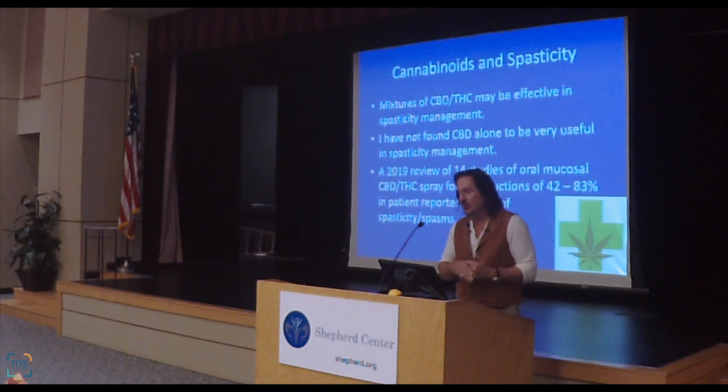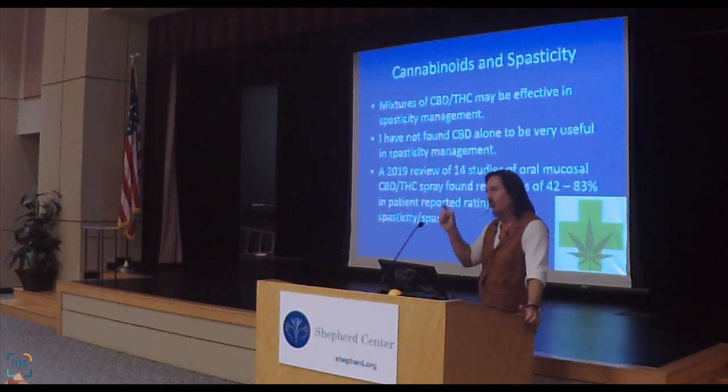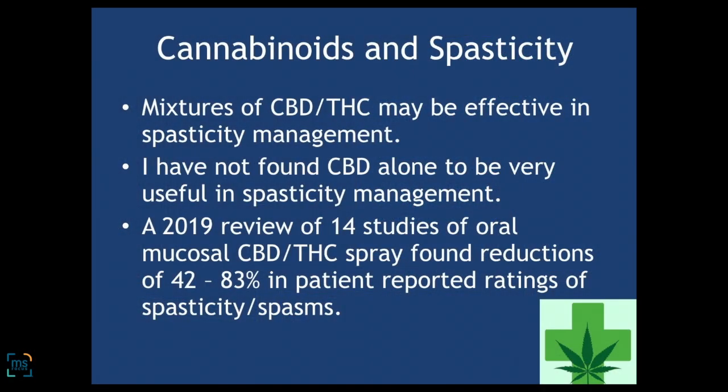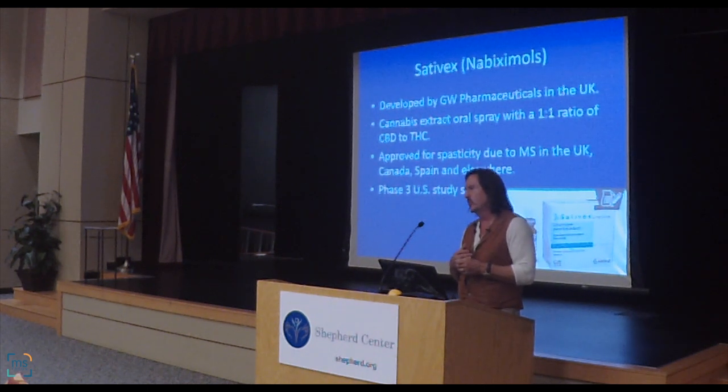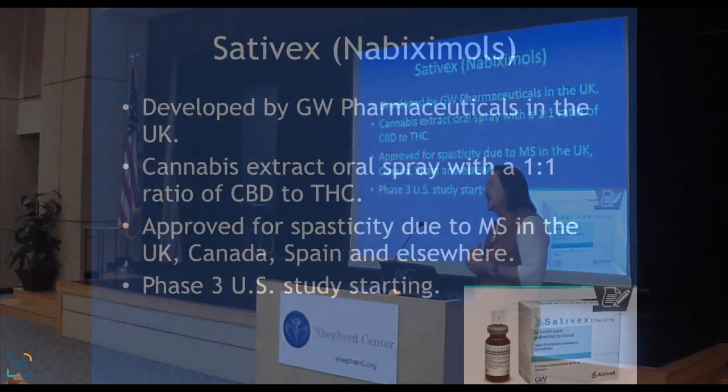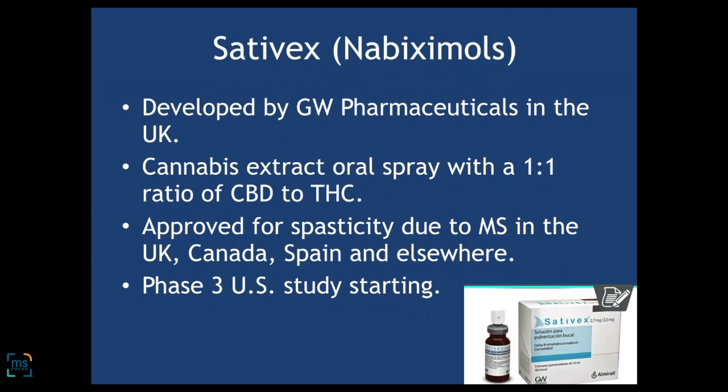There is science behind CBD and THC. A study published in August of this year looked at 14 other studies and put all that data together, examining a one-to-one mixture of CBD and THC in an oral mucosal spray — basically Sativex. They found that across those studies people reported a decrease in spasticity and spasms ranging from 42% to 83% — a significant improvement. Sativex is made by GW Pharmaceuticals in the UK. It is a one-to-one mixture of CBD and THC from cannabis that this pharmaceutical company has a proprietary blend for, and it has been approved for managing spasticity and spasms in MS in the UK, Canada, and Spain for probably 10 years.